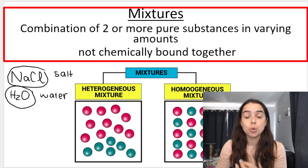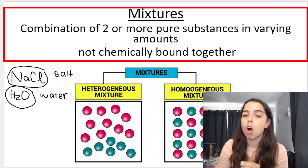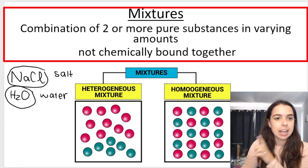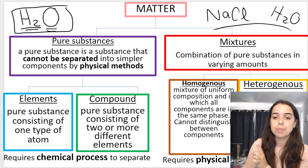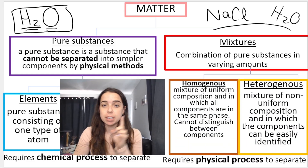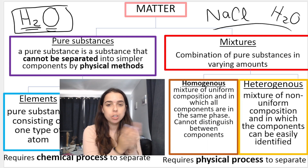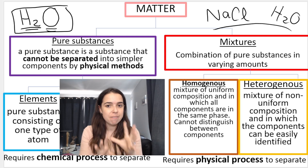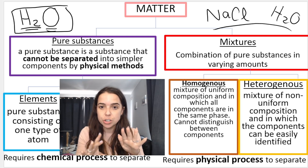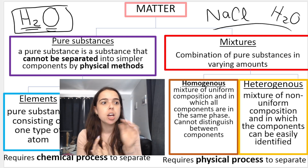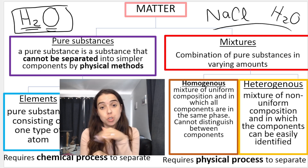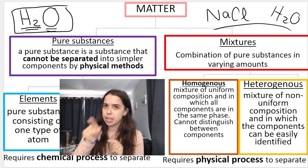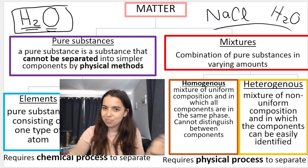The salt water example is an example of a homogeneous mixture. A homogeneous mixture is a mixture of uniform composition — uniform means the same — in which all the components are in the same phase and you cannot distinguish between the components. So if you think about salt dissolved in a glass of water, if you dissolve it properly, you can't look at the glass and say 'there's the salt and there's the water.' It just looks like one thing. It's homogeneous.